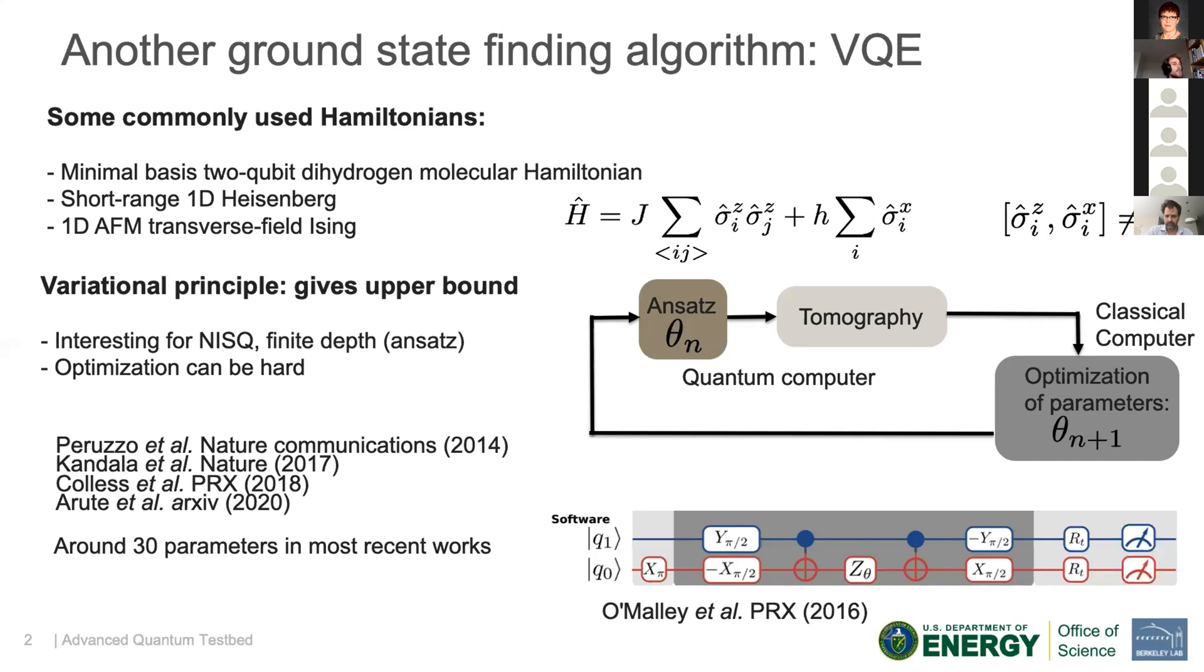In the case of VQE there is an ansatz. I show here the ansatz which was used in a work by Google for two qubits, where there is a variational parameter, here the theta on this Z gate, which will be optimized at each step.